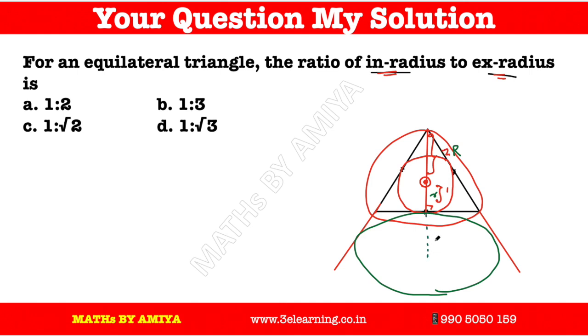The ratio of in-radius to ex-radius is small r to capital R. What is the ratio of any triangle? In-radius is equal to delta upon s, and the ex-radius is equal to delta upon s minus a.